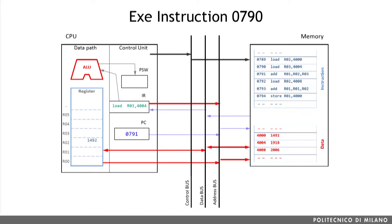Instruction 0790 is a load, which means that also in this case we have to access the memory to read the data that has to be stored in the latch register. In this case, the value we are looking for is stored at address 4004, and thanks to the control unit sending the read command, we can load the data stored in memory into register R03.